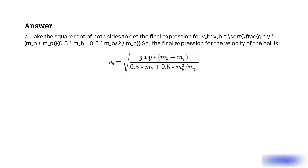Step 7. Take the square root of both sides to get the final expression for vb: vb = sqrt(g * y * (mb + mp) / (0.5 * mb + 0.5 * mb² / mp)). So the final expression for the velocity of the ball is vb = sqrt(g * y * (mb + mp) / (0.5 * mb + 0.5 * mb² / mp)).